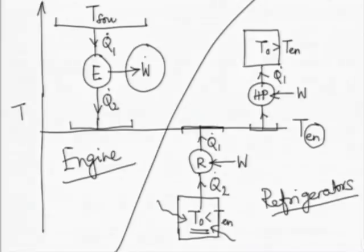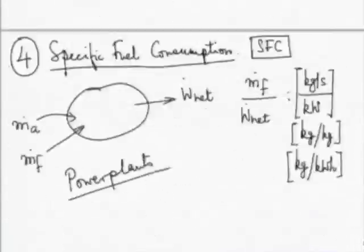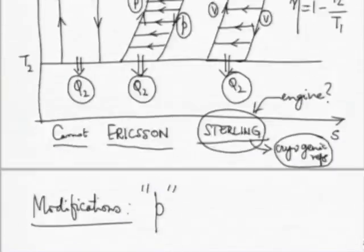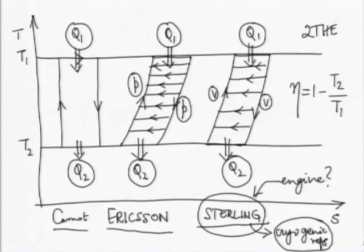That brings us to the end of the quick interaction after lunch. Let me continue from where I left off. In the morning we looked at various parameters, classification, etcetera. We looked at two modifications of the Carnot cycle: the Ericsson type modification and the Stirling type modification. To confirm: Ericsson is two isothermals and two constant-pressure processes, and Stirling is two isothermals and two isochoric (constant-volume) processes.